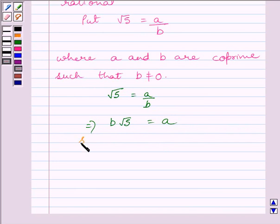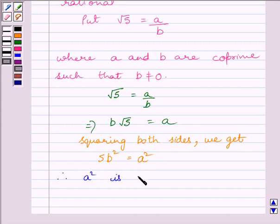Now, squaring both sides we get 5B square equals A square. Clearly, we can see 5 and B square both are factors of A square. So, we can write A square is divisible by 5. This further implies A is divisible by 5.